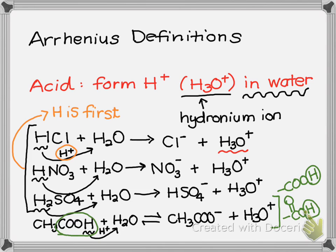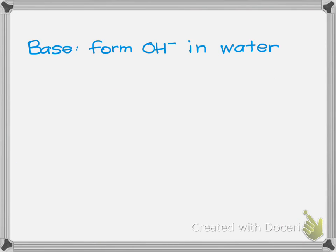Now let's take a look at the definition of a base. In an Arrhenius definition, the base forms what's called hydroxide ion - we learned this when we were doing polyatomic ions. It's the hydroxide ion right here, and again this is the Arrhenius definition which means it's limited that it has to be in water.